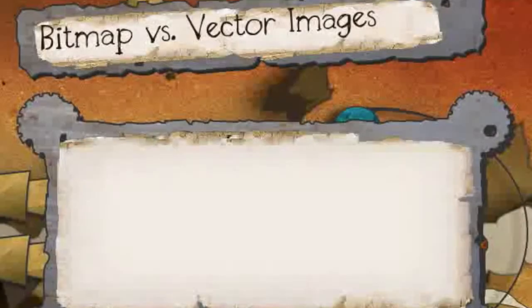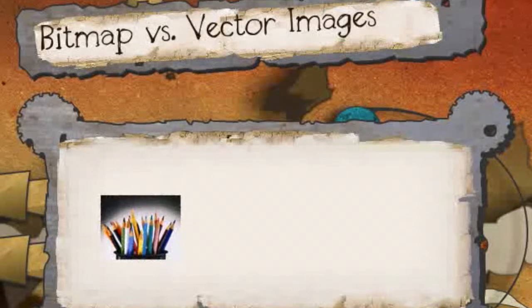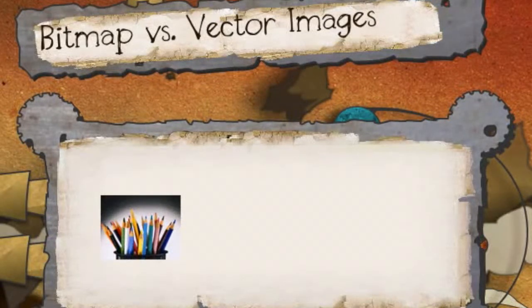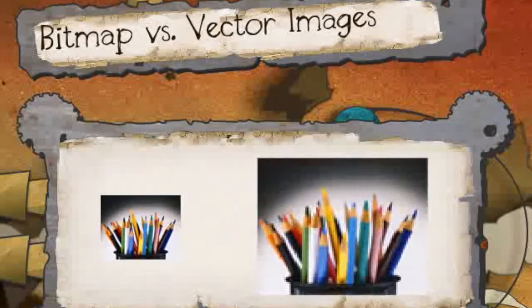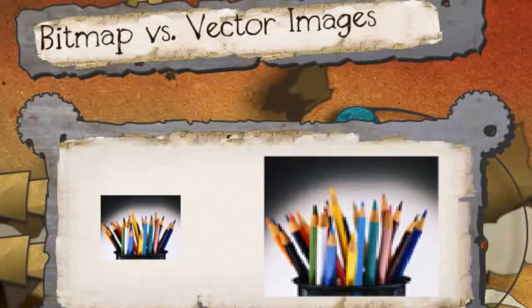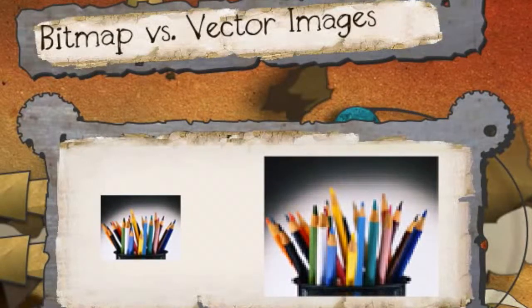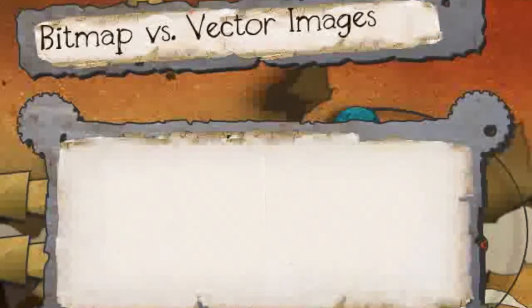So let's say you bring in a bitmap that is 500 pixels wide, and in Flash you decide to expand it to 1,000 pixels. If you do this, it's going to decrease in quality, because it's not going to be its original file size - you're going to get pixelization, and it's not going to look as good as it could.